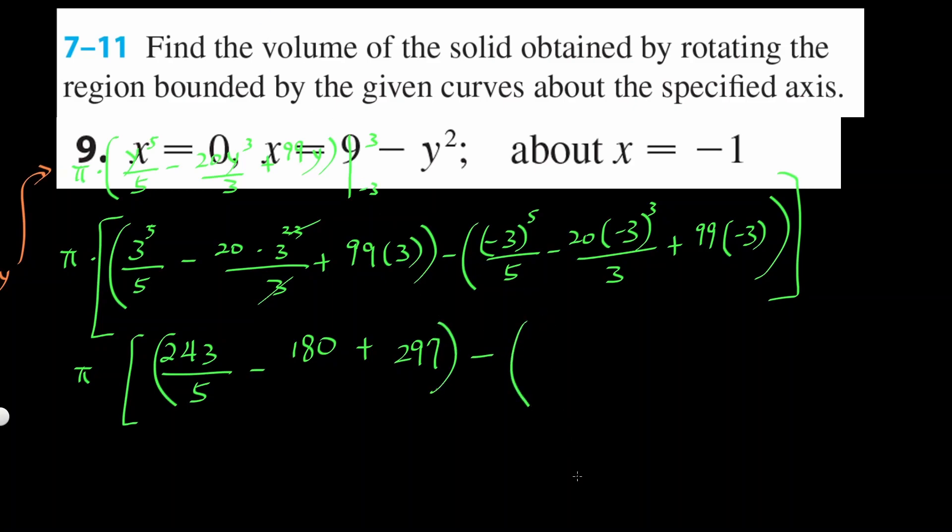Minus, that's going to be 3 to the fifth was 2. Remember, this is negative 243 now, over 5. Minus, it's going to be plus because negative 3 cubed will be negative, and minus becomes plus. Plus, that's going to be 3 times 9, because 3 cancels with one of the negative 3 there, and then minus 297.